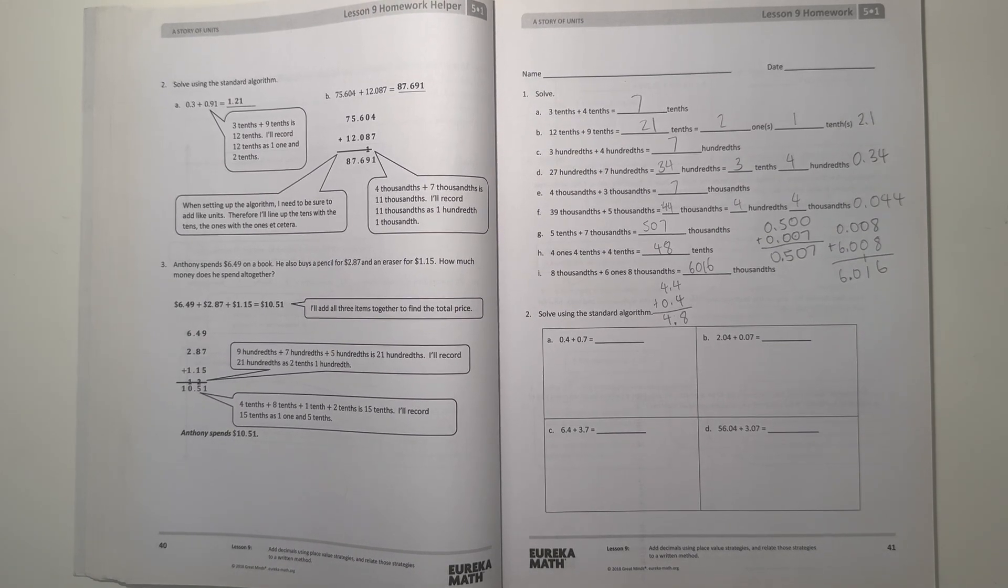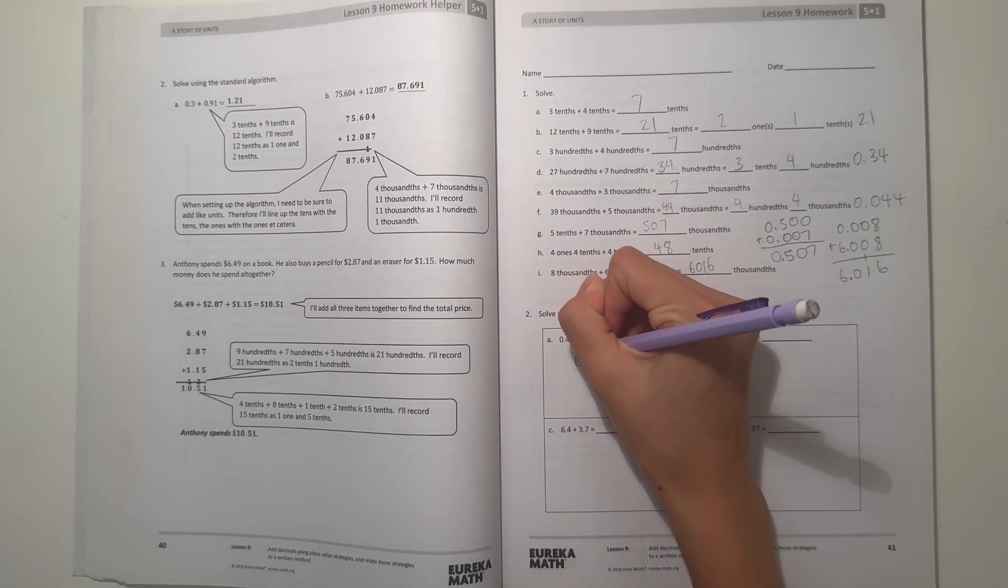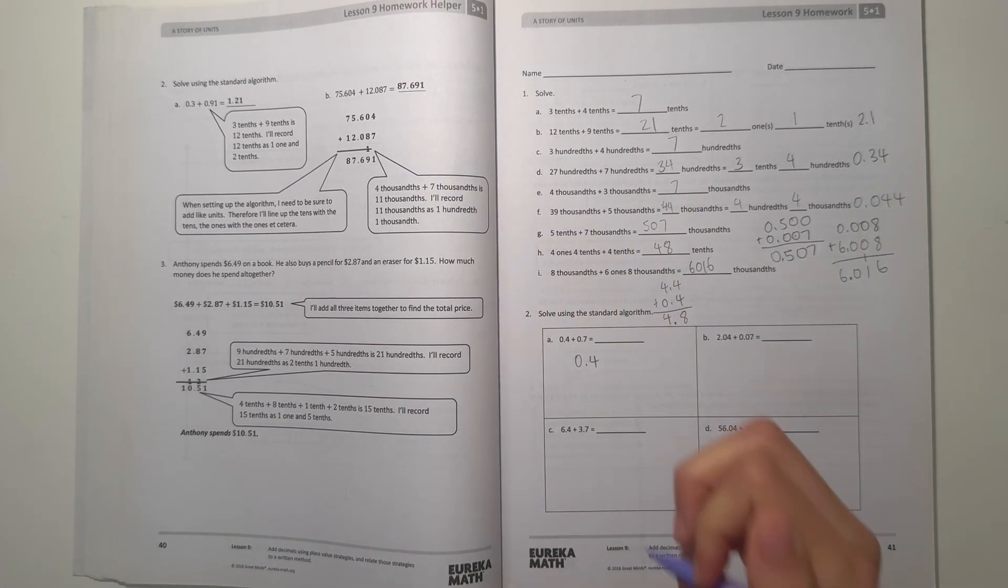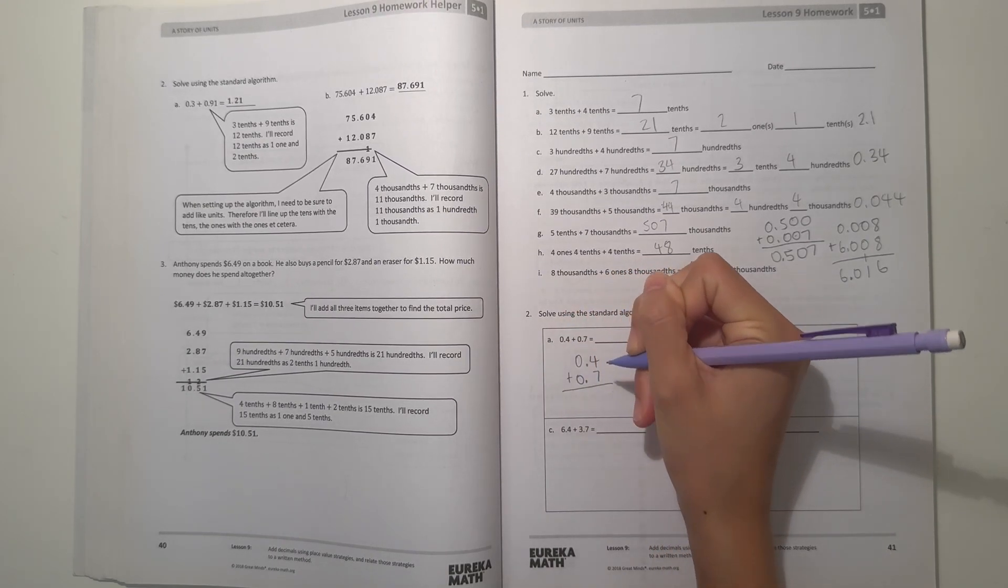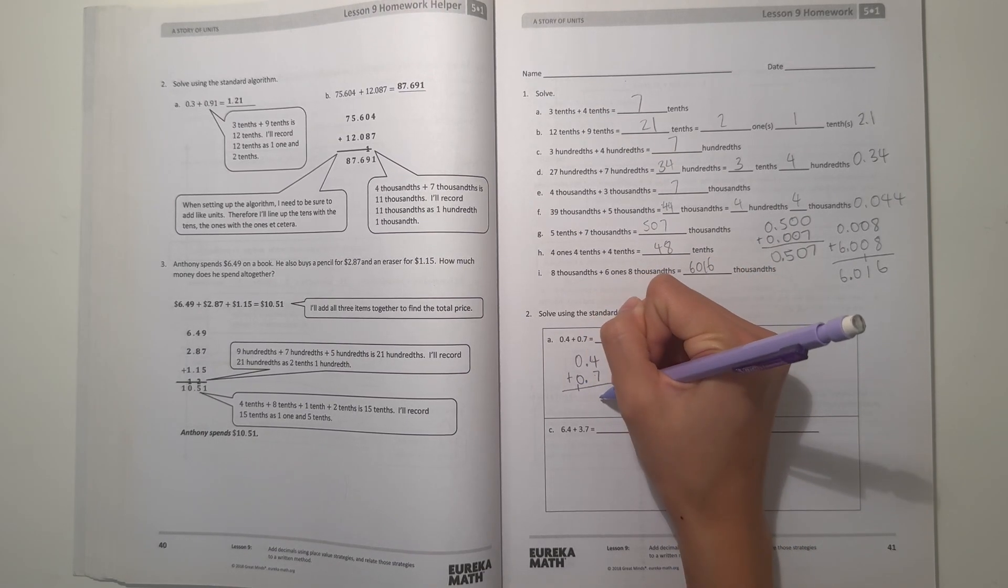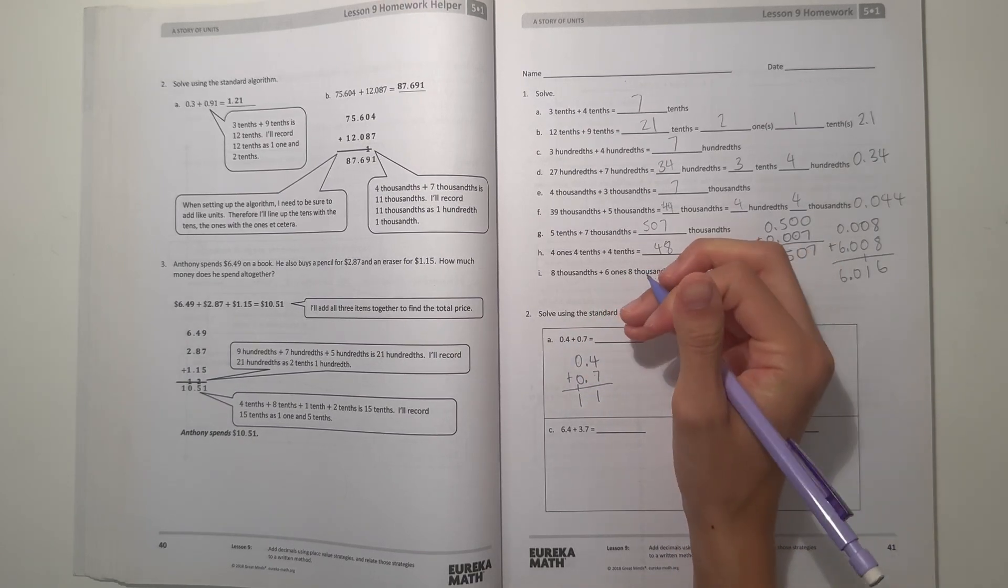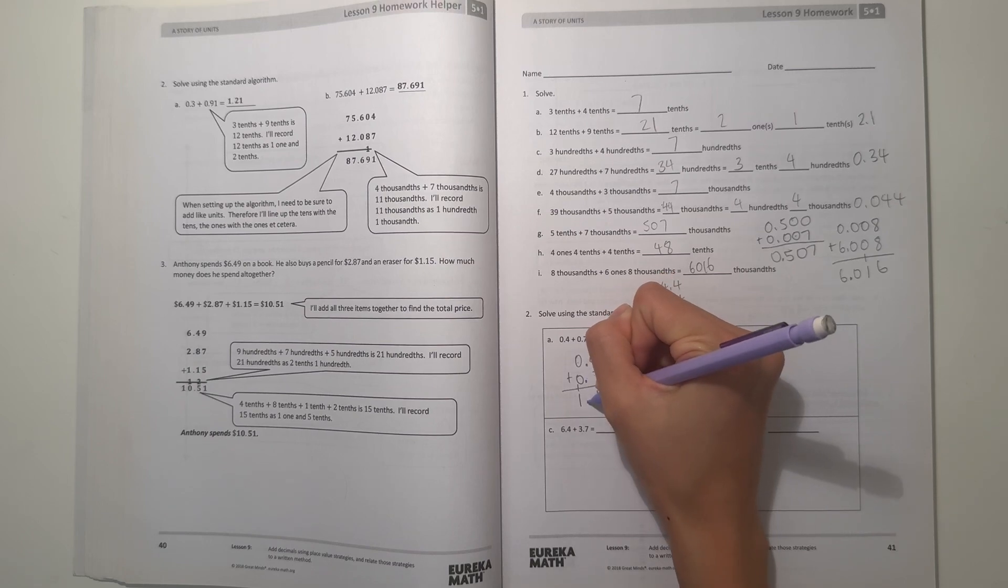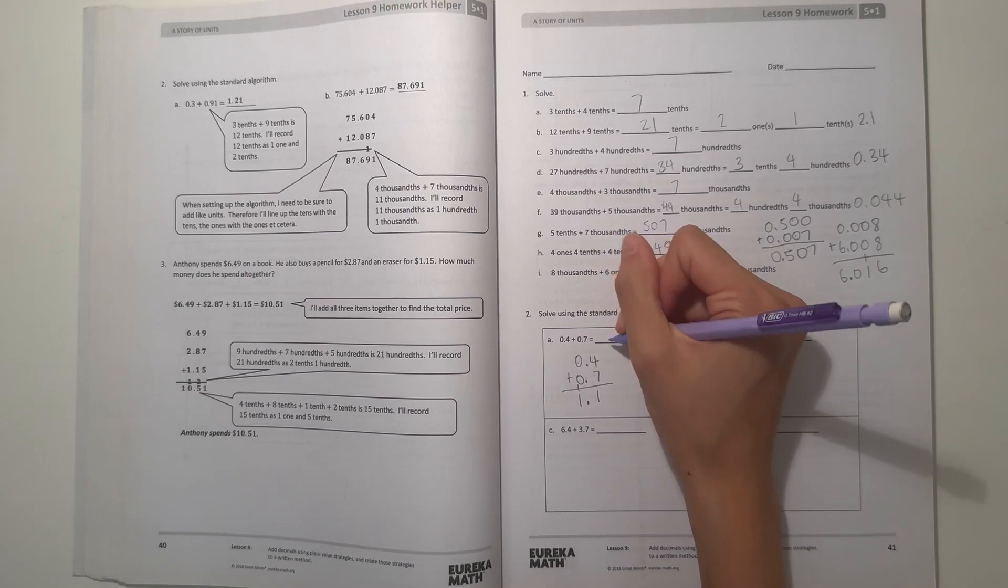Alright, number 2. Solve using the standard algorithm. So A, we have 0.4 plus 0.7. So let's write it 0.4 plus 0.7. And now let's add. So we just add normally. So 4 plus 7 is 11. So carry the 10. And then 0 plus 1 would be 1. And now we can't forget to move the decimal point down. So our answer to 0.4 plus 0.7 would be 1.1.